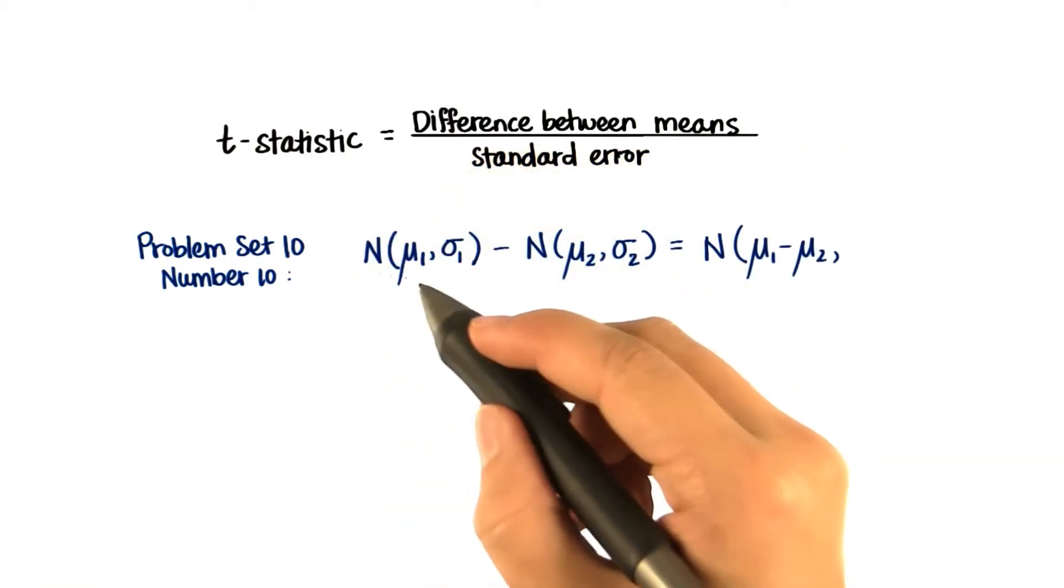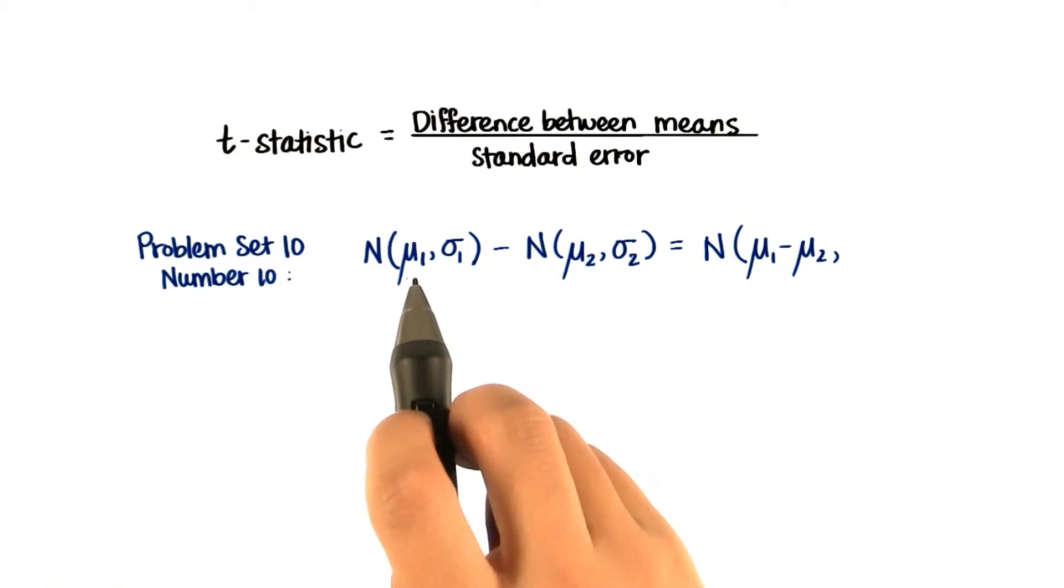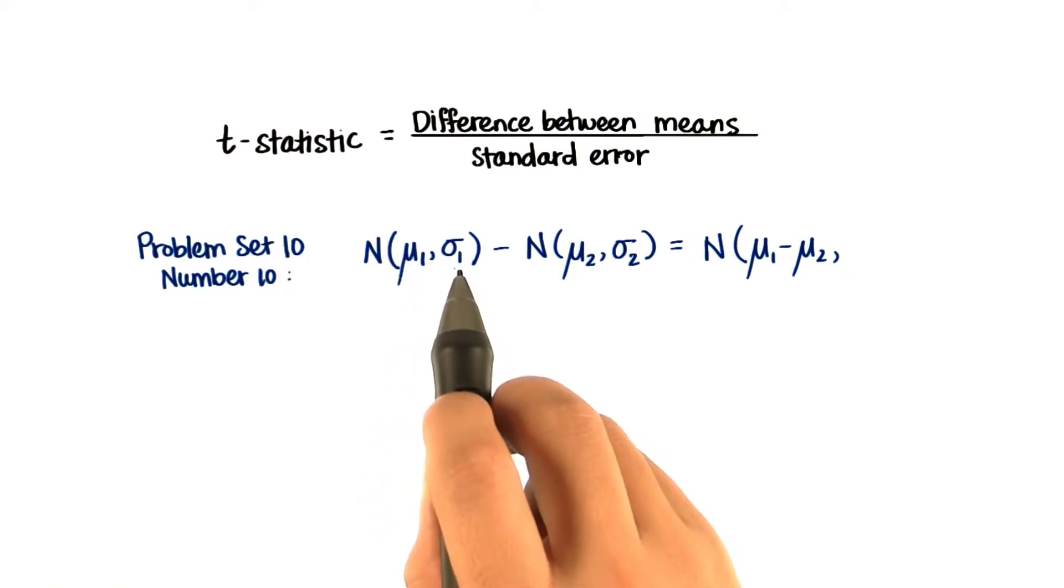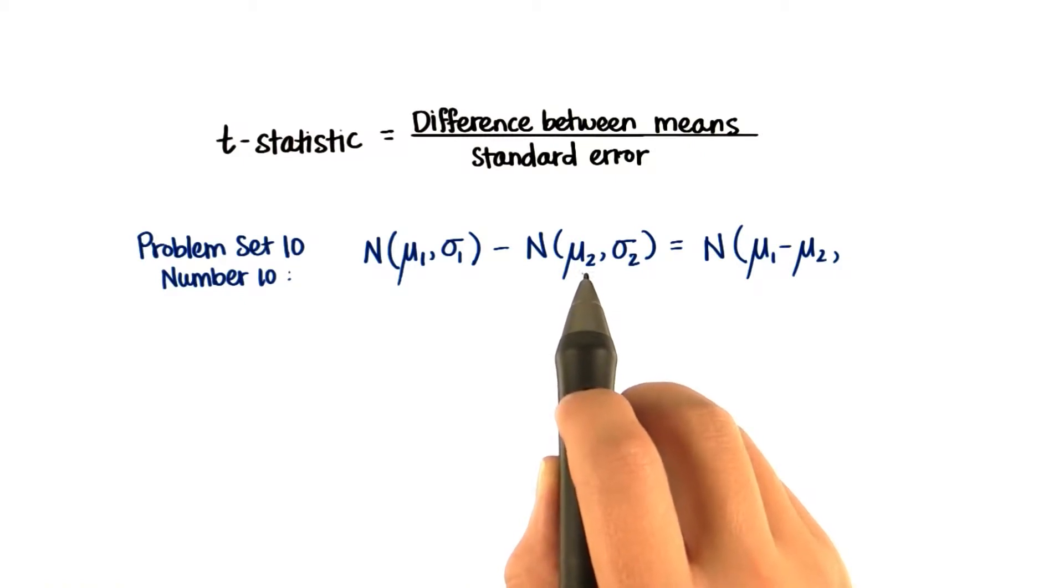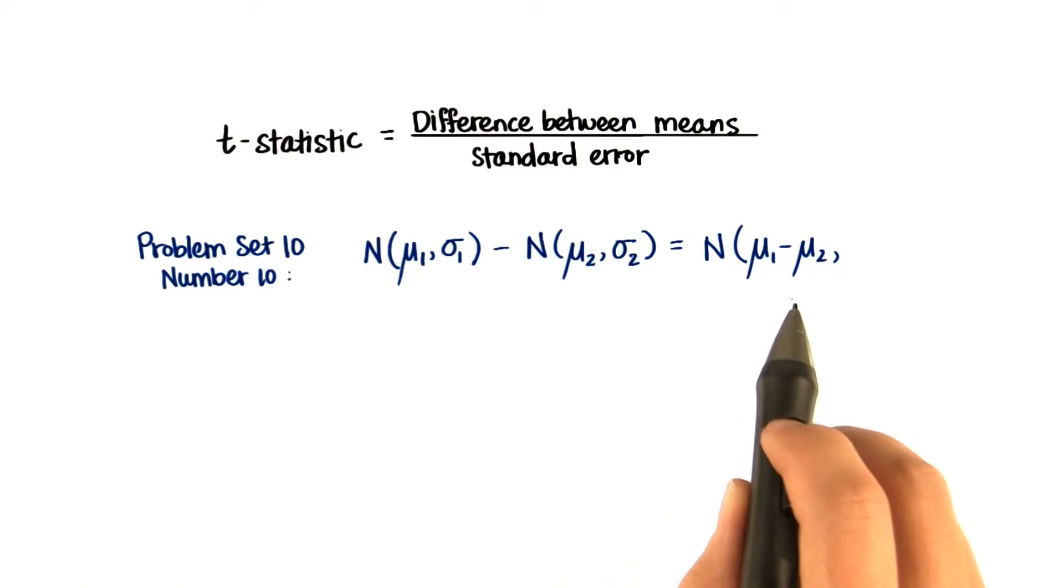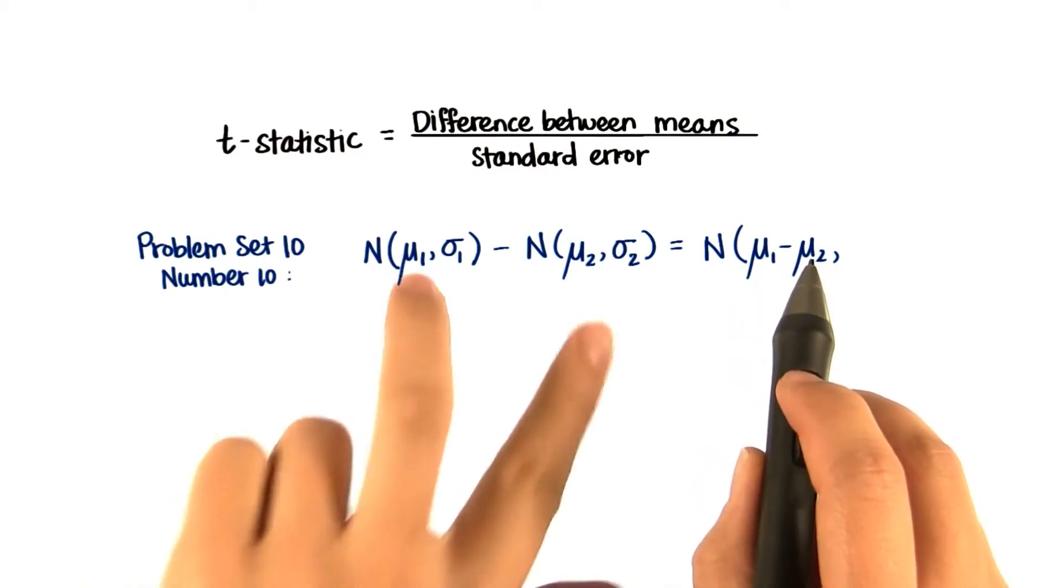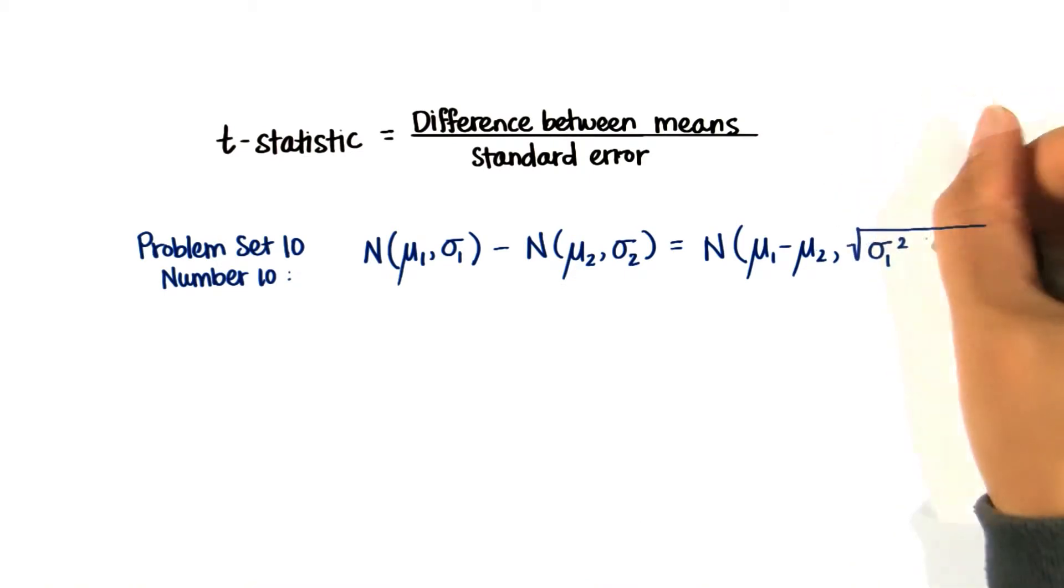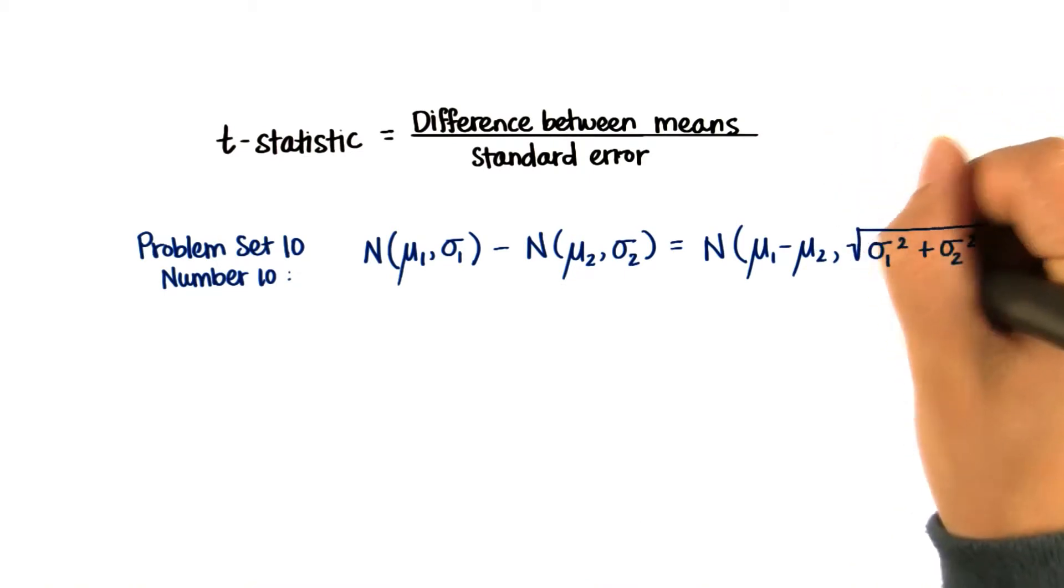So here I'm symbolizing normally distributed data with a mean of mu sub 1 and a standard deviation of sigma sub 1. And we're subtracting normally distributed data with mean mu sub 2, sigma sub 2. We get a new data set that has mean of just the difference between these two means. But then the standard deviation is the sum of the variances and then the square root.